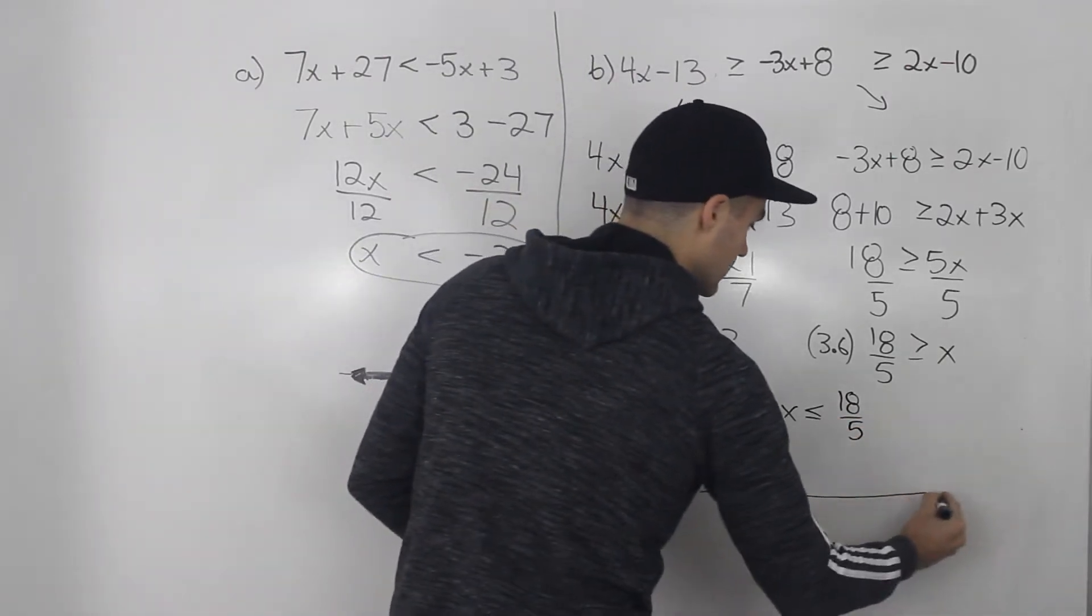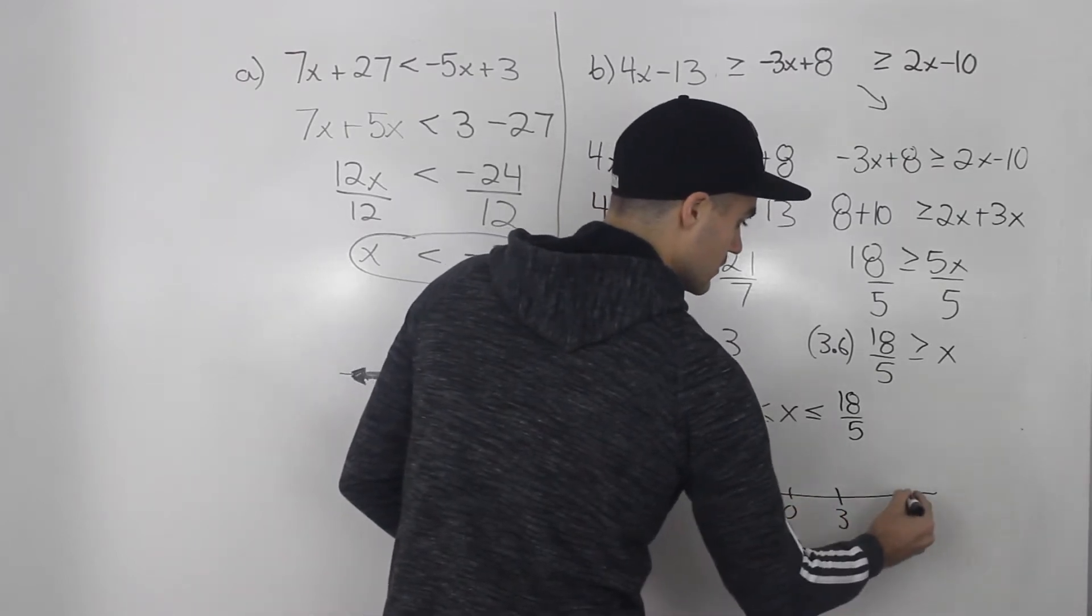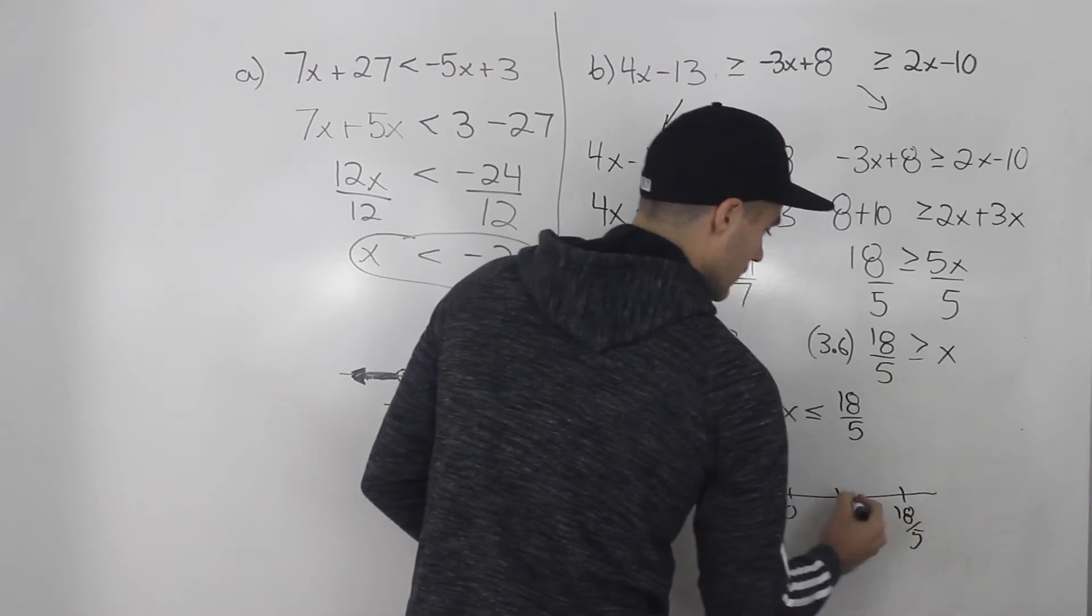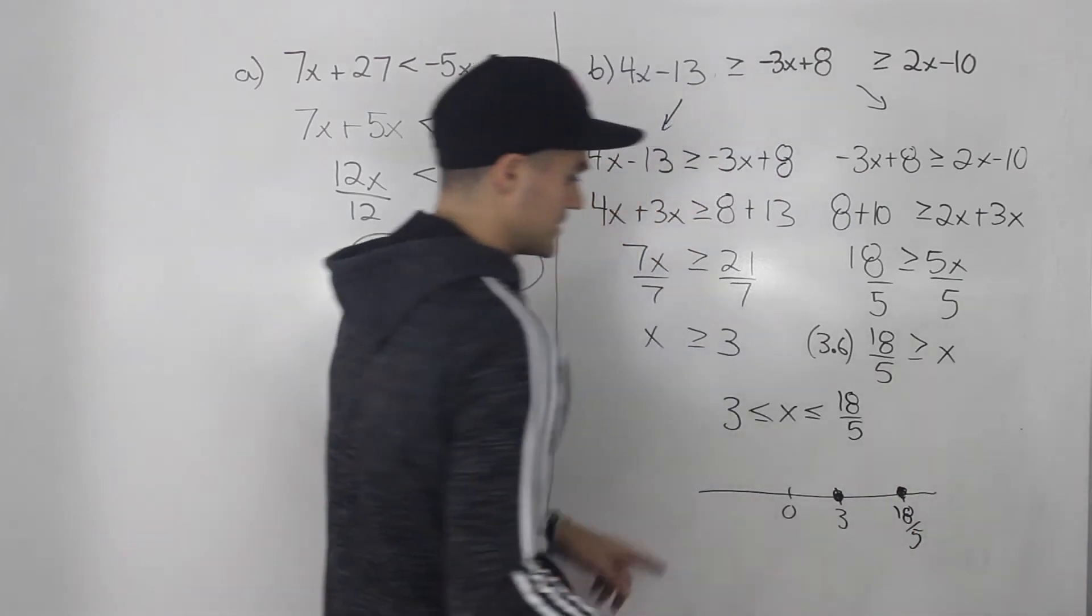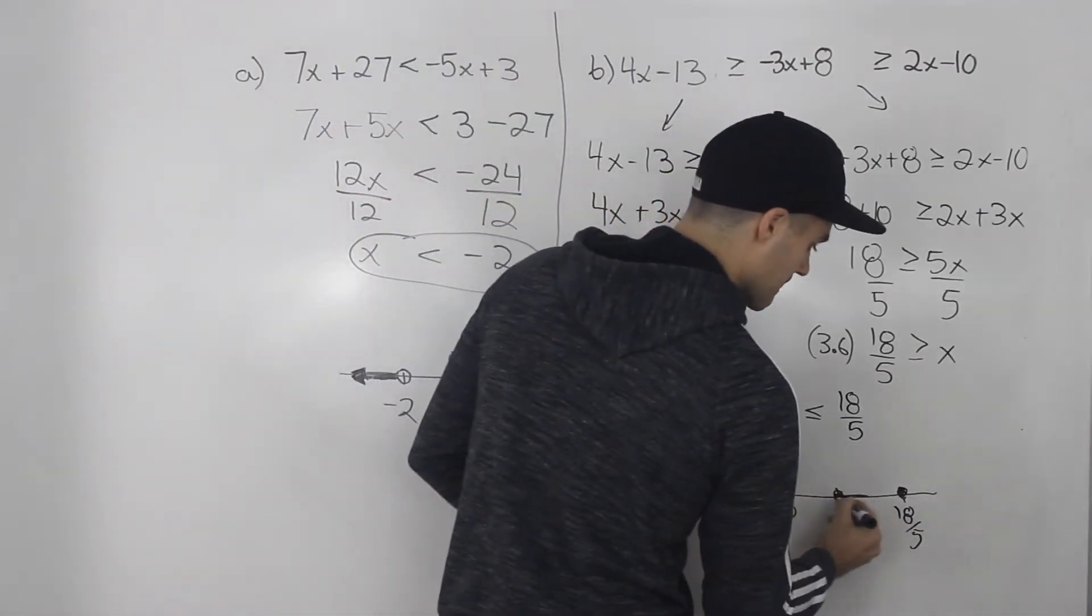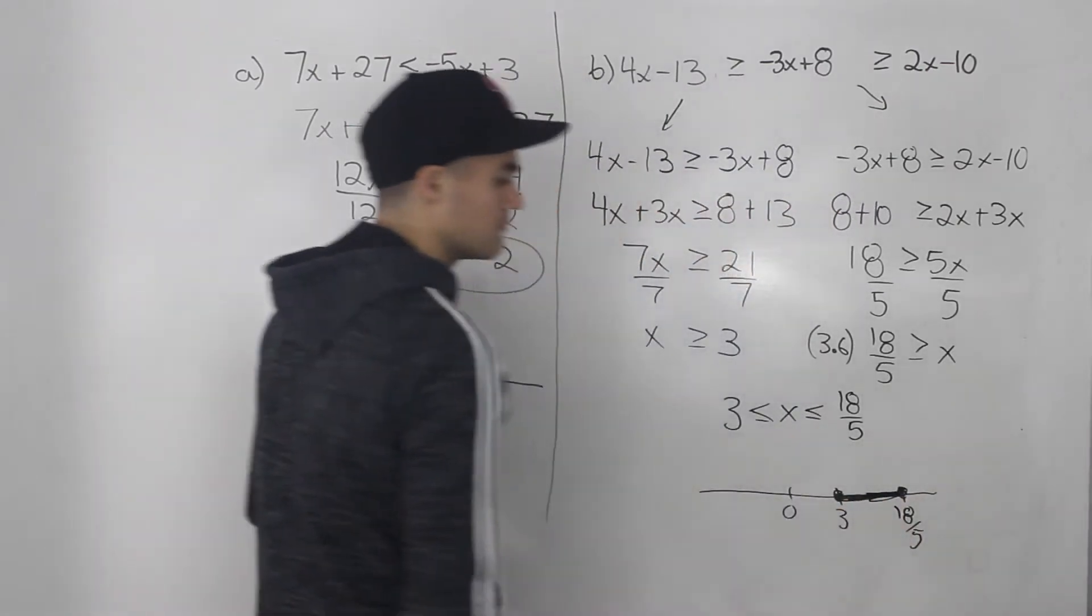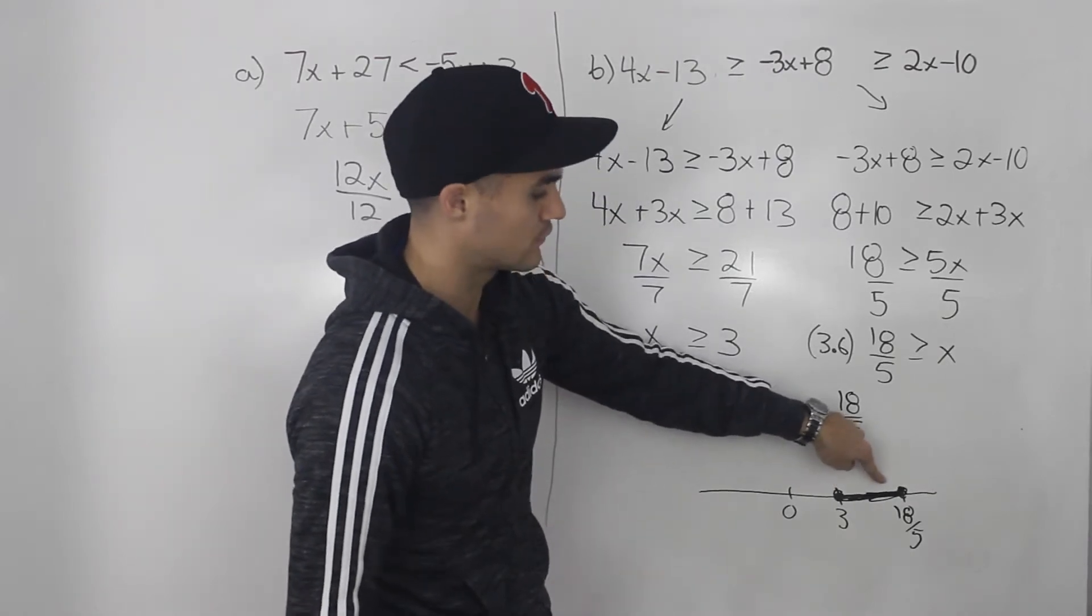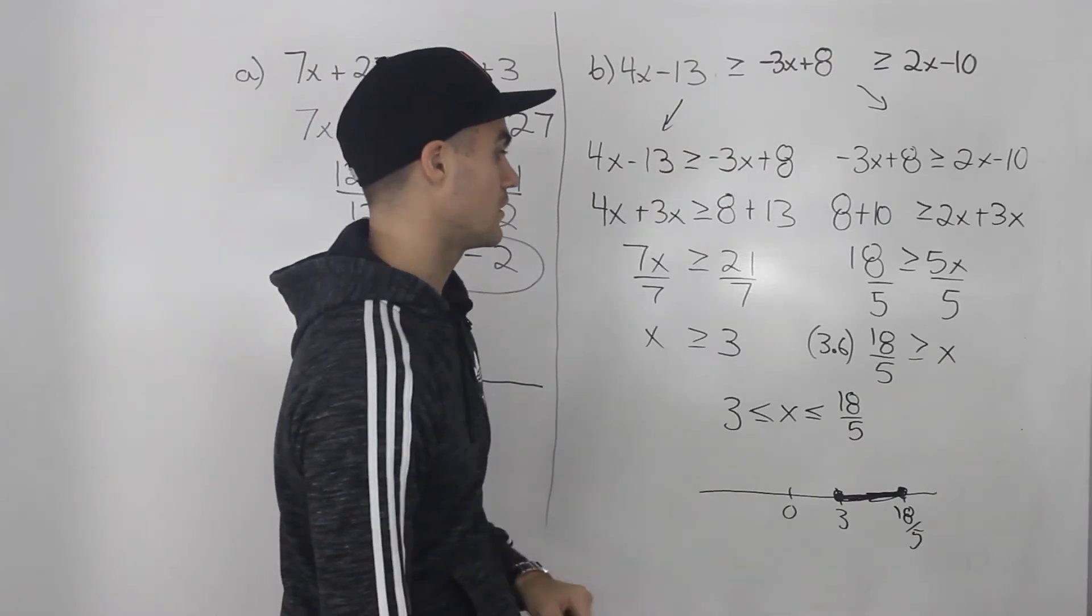And if we show that on a number line, so let's say 0 is right here. This would be 3. This would be 18 over 5. At 3 and at 18 over 5, it would be solid dots because it's inclusive of those end points. And we would just fill the middle in. So all the x values here, between 3 and 18 over 5, inclusive of both of those, are possible solutions for this inequality.